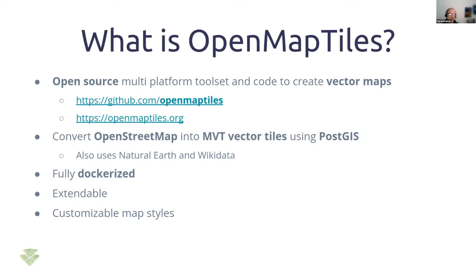Essentially, it converts OpenStreetMap data into vector tiles using PostGIS — thank you, PostGIS. It also uses other data sources such as Natural Earth and Wikidata, is fully dockerized, and you can create your own styles and your own data layers using OpenMapTiles as the base.